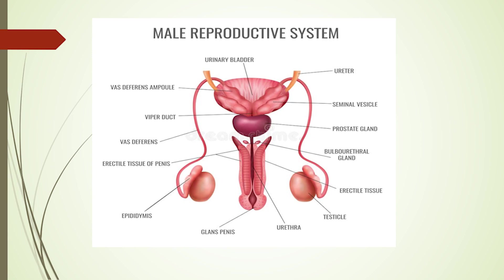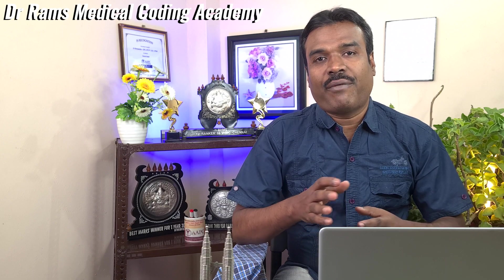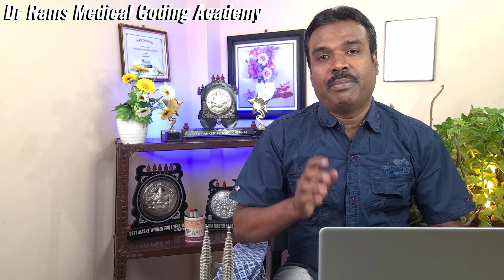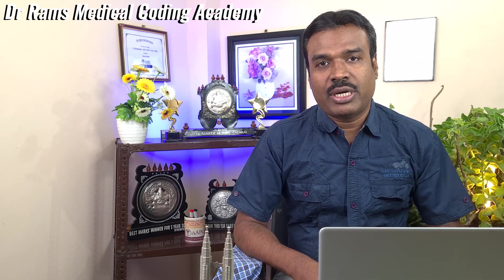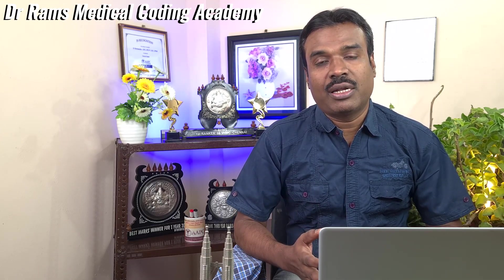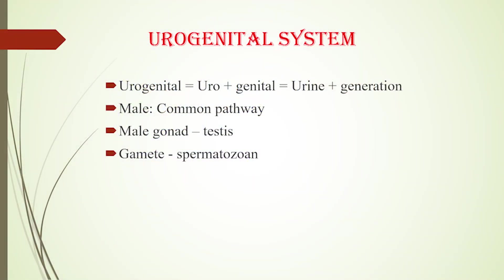The urogenital system can be conveniently divided as the urinary system and the genital system. The question is: why do we club this as urogenital? Because the urinary tract and the genital or reproductive tract actually join as a common passage. So we call it the urogenital system — 'uro' refers to the urinary portion and 'genito' refers to generation or birth. This system is involved with the transportation of urine as well as spermatozoa found in semen.